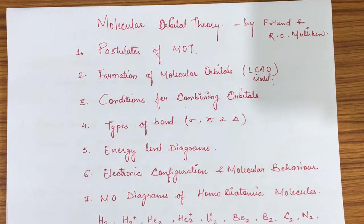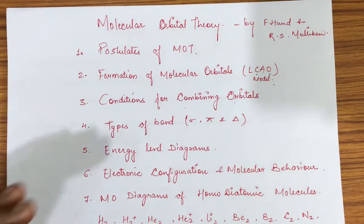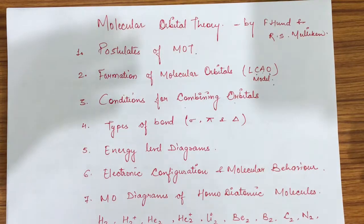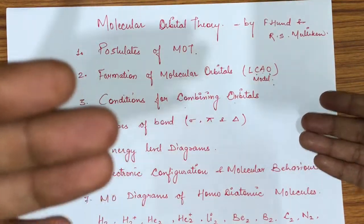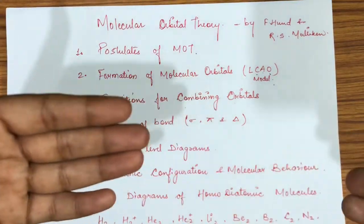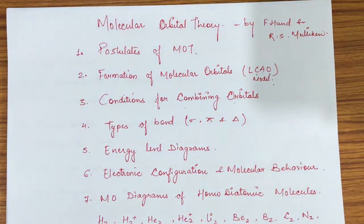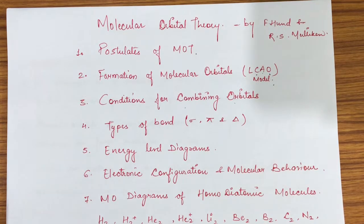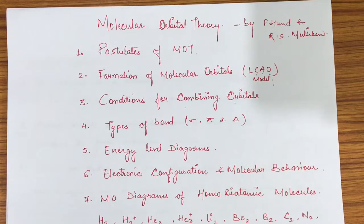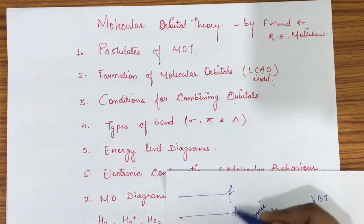For example, if you have an atomic orbital with very low energy and another with very high energy, will they combine? The energy levels need to be comparable when they come together for combination to occur. After understanding conditions for combining orbitals, we will see the types of bonds formed when molecular orbitals are created. We will also study the energy level diagram — in atomic orbitals, S has the lowest energy, then P, D, and F. In molecular orbitals, what will the energy levels be?